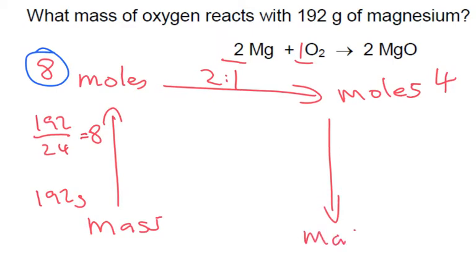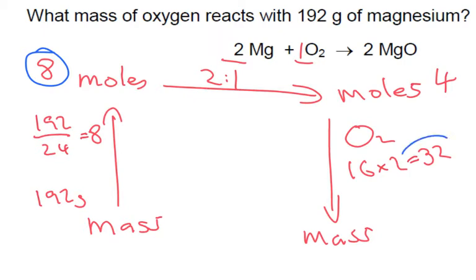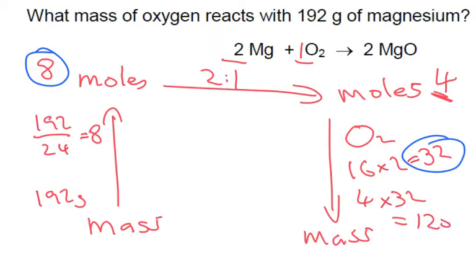Back down we go to mass — what mass of oxygen is what we're after? Oxygen is O₂, so 16 times 2, which is 32. Each mole would be 32 grams, but remember we have 4 of them, so 4 times 32 is 128 grams. That's our final answer.